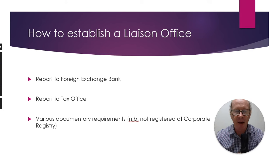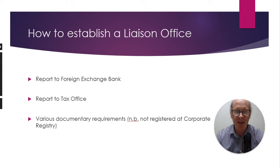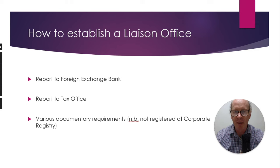So how do you go about establishing a liaison office? That's relatively simple. The process basically involves reporting to the foreign exchange bank. Korea has foreign exchange control laws — the main piece of legislation governing that is the Foreign Exchange Transaction Act. All money coming into and going out of Korea is monitored by the Bank of Korea, and in practice that responsibility is delegated to the foreign exchange bank. So the first step is to report the establishment of the liaison office to the foreign exchange bank.